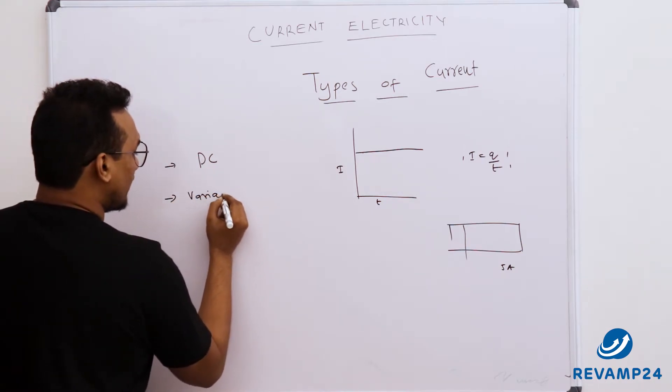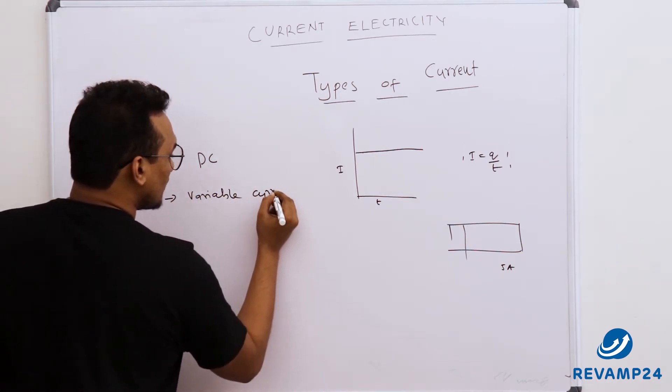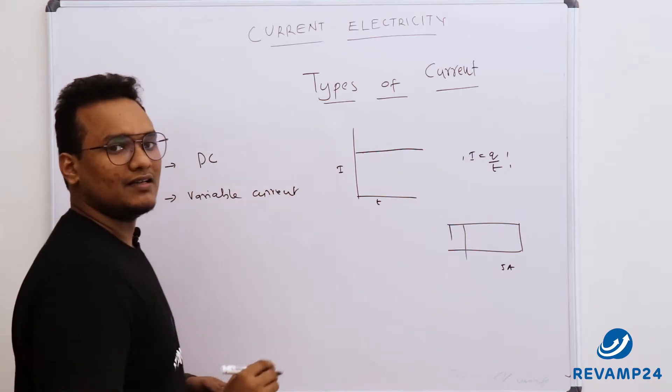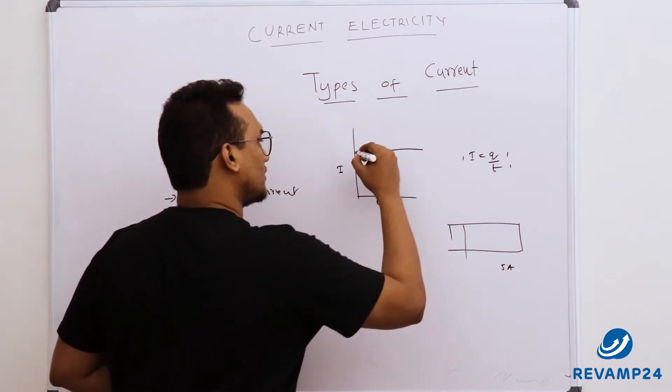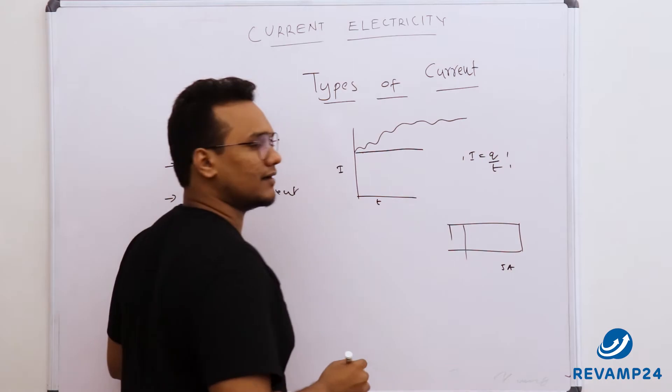Now next thing is variable current. What is variable current? Where value of the current gets changed over time. So that is nothing but it has no pattern. It can be any value, some random value.